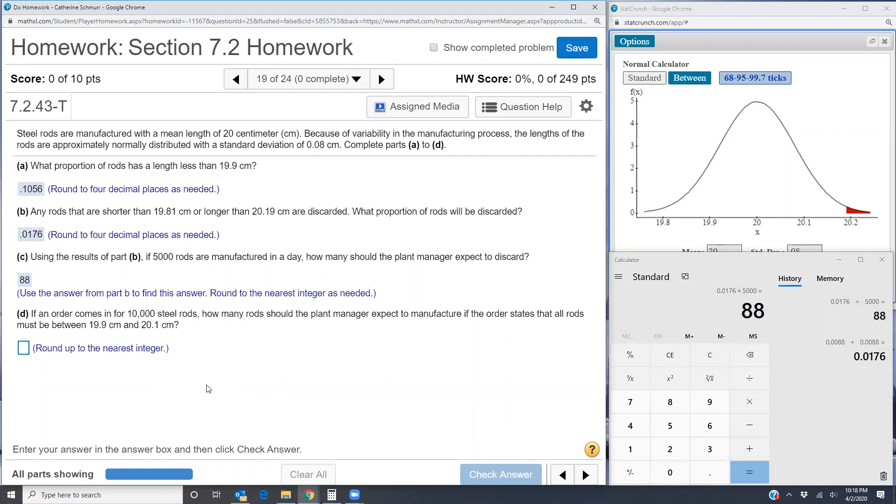Part D, if an order comes in for 10,000 steel rods, how many rods should the plant manager expect to manufacture? In this case, we don't know how many the plant manager has to make, but we know that we need 10,000 at the end of the day. So how many does he have to manufacture if an order is for 10,000 steel rods?